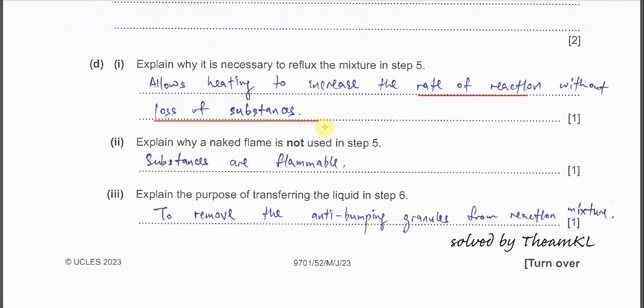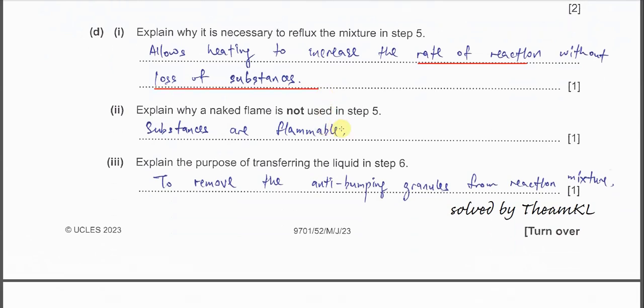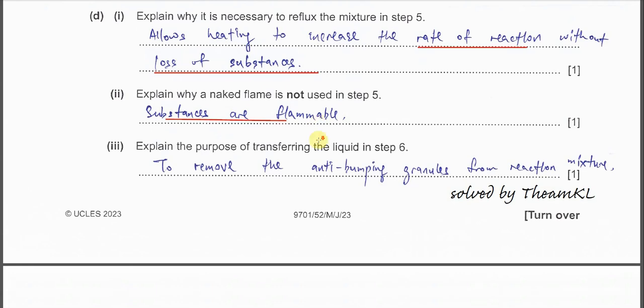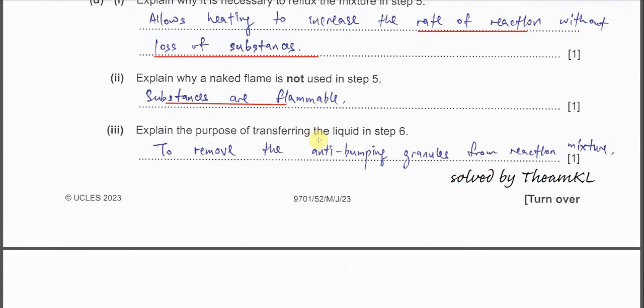Part D2: Explain why a naked flame is not used in Step 5. Because we are heating an organic mixture, and organic solvents are flammable — so we do not use direct heat. Part D3: Explain the purpose of transferring the liquid in Step 6. After the reflux and cooling, we need to pour the reaction mixture into a beaker to remove the anti-bumping granules from the reaction mixture.